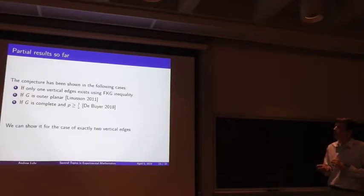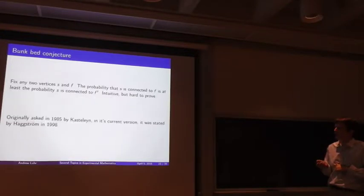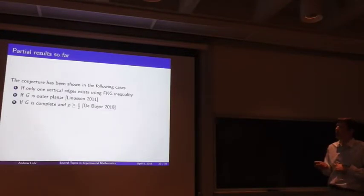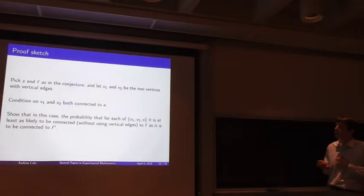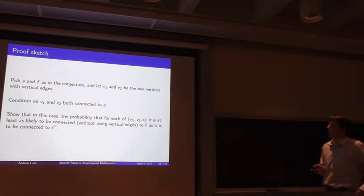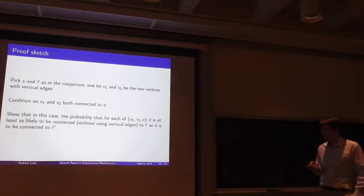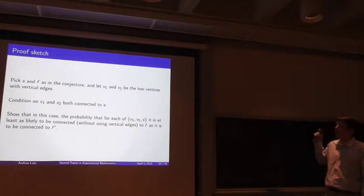What we're going to do is take this first one, which Hagstrom mentions in 1998 with a one-paragraph proof using FKG inequality. We're going to extend that to two vertical edges. Here's a very sketchy sketch of our way we're going to do it. Instead of looking at individual edges, we're going to abstract out a little bit and only look at probabilities that things are connected with each side. We're using FKG to say if they're positively correlated.